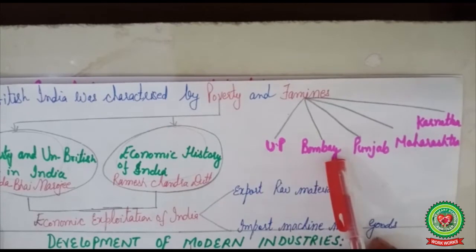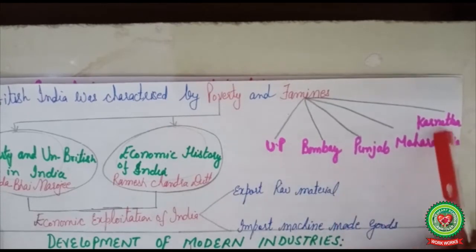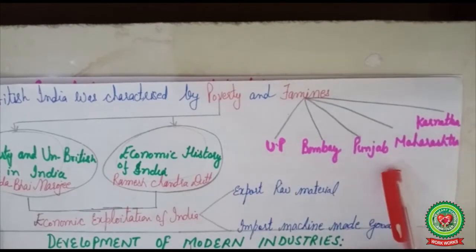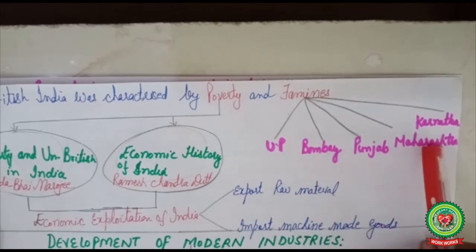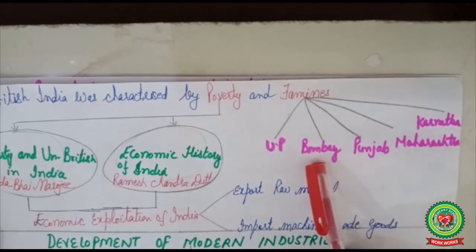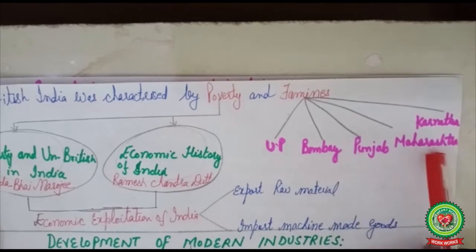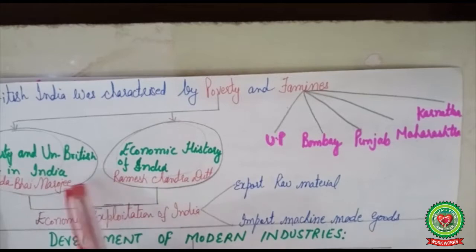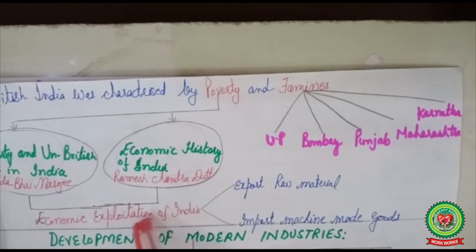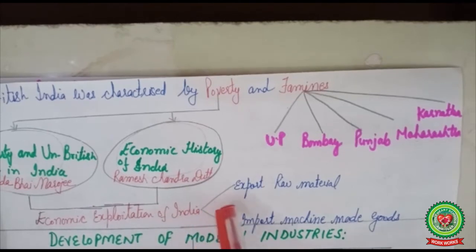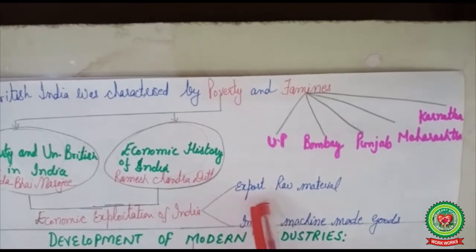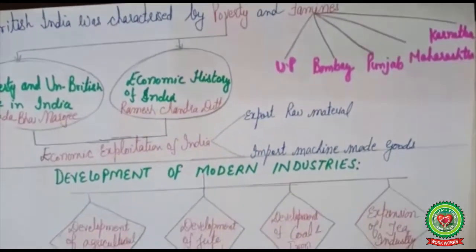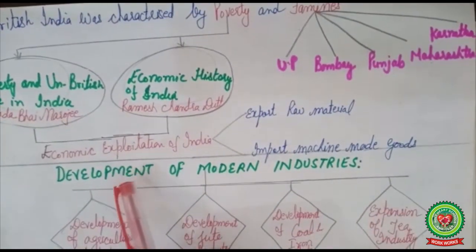These provinces included UP, Bombay, Punjab, Maharashtra, and Karnataka. Unlike today, Bombay was not part of Maharashtra — Bombay Presidency was a separate province and Maharashtra was a separate province. According to these intellectuals, the British had totally economically exploited India, and this was widely criticized. Under pressure from the intellectual class, the British decided they would develop modern industries in India.